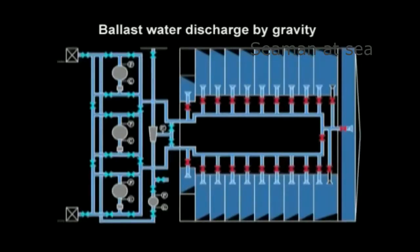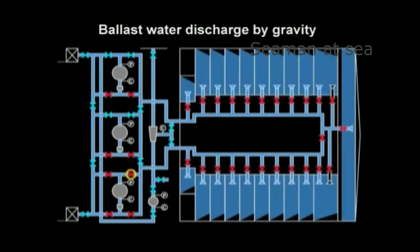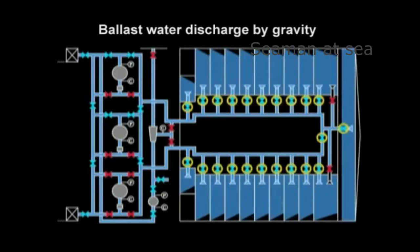Next, let's see the steps for ballast water discharge by gravity. Operate valves to put the line-up in the proper order, bypassing the ballast pump. The ballast water discharge by gravity begins as the tank's valves are opened.